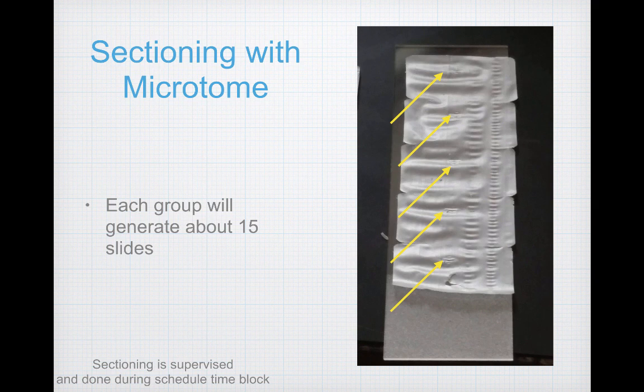After your block is made, you'll be ready for sectioning with the microtome. This step will take place during designated time blocks with each group because we only have one microtome, and I don't want any accidents with the sharp blade, so you'll be supervised the whole time. Each group will aim to generate about 15 slides with ribbons about the same length as shown in the picture — you can also see small pieces of tissue embedded in the wax.